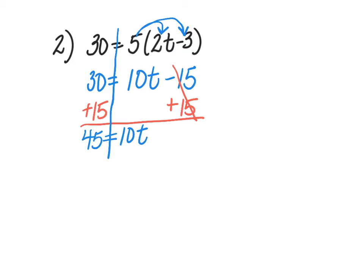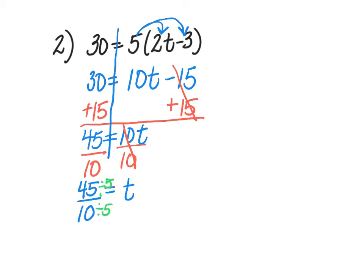Now it's time to do the last step of dividing by the coefficient. The coefficient of t is 10, so I divide both sides by 10, leaving t = 45/10. Since 10 doesn't go into 45 evenly, I'll leave it as an improper fraction and reduce it. The biggest number that goes into both 45 and 10 is 5, so dividing numerator and denominator by 5 gives 9/2. That's my solution: t = 9/2.